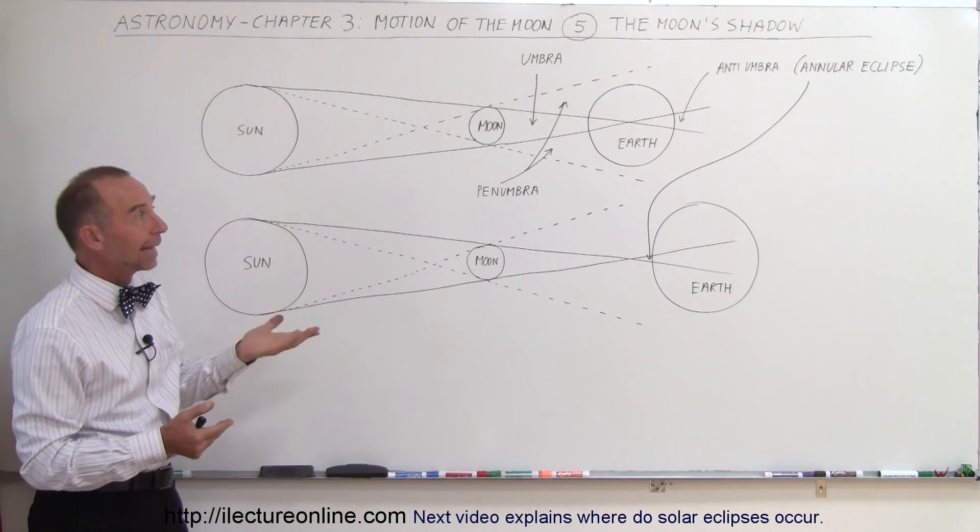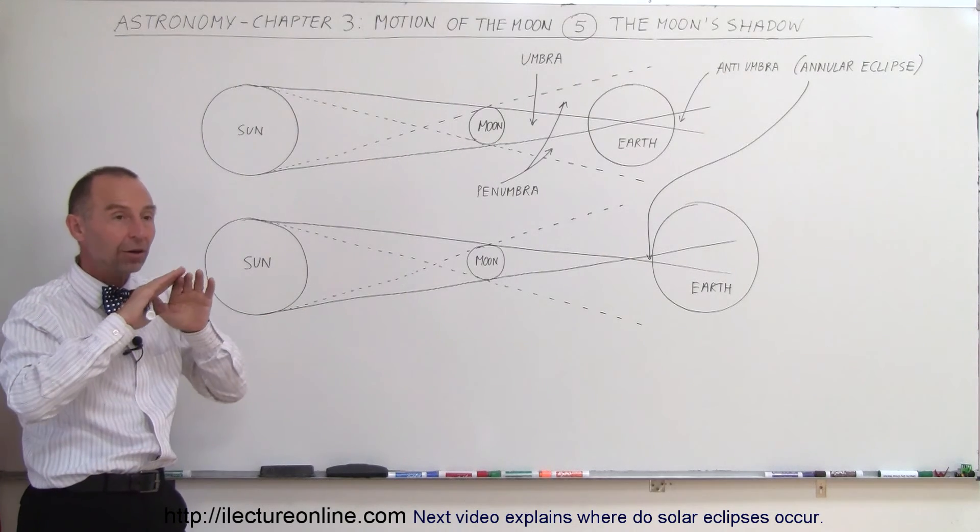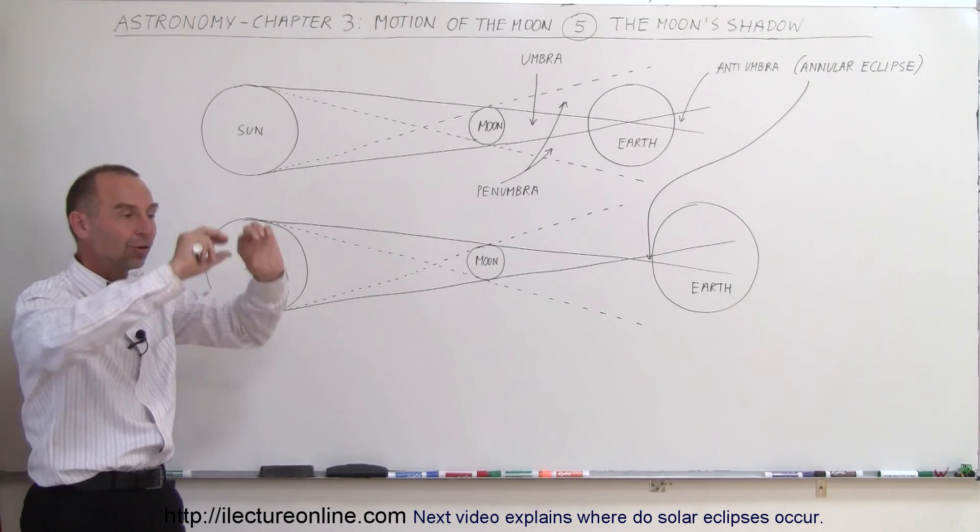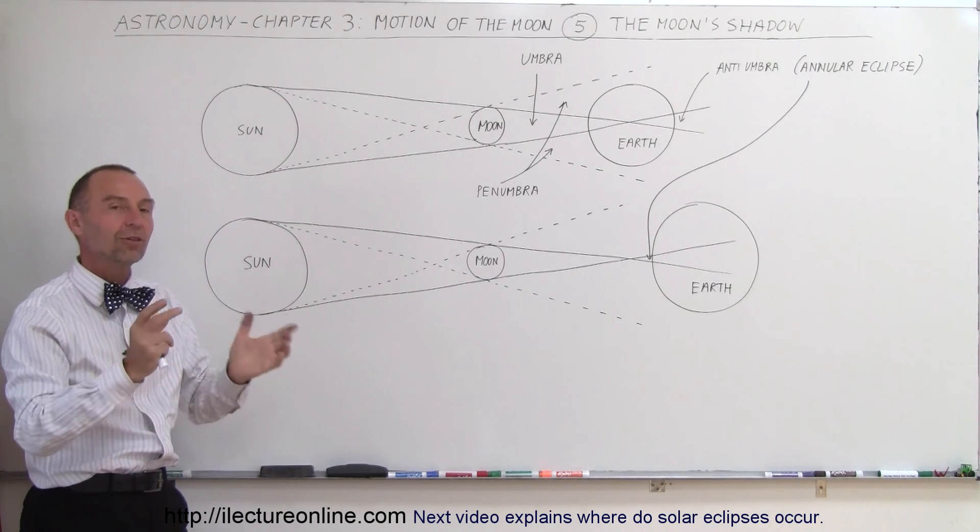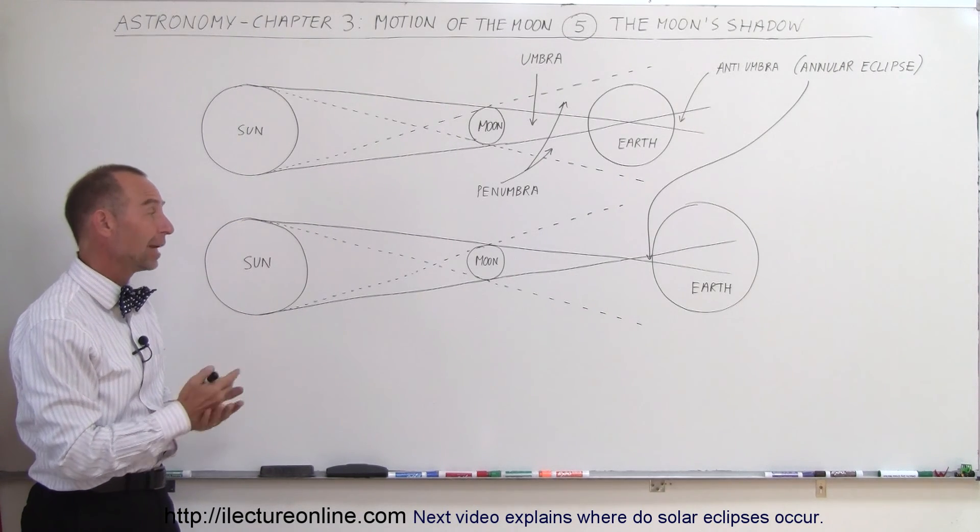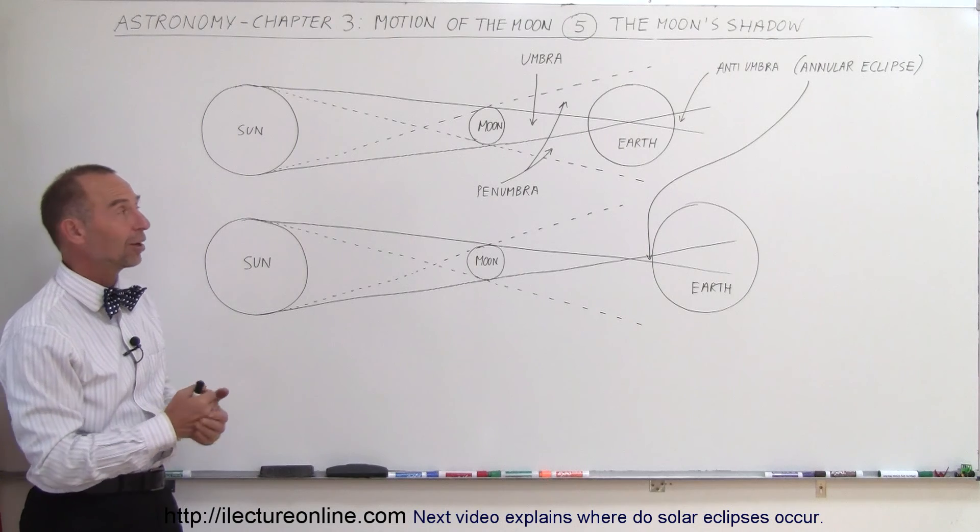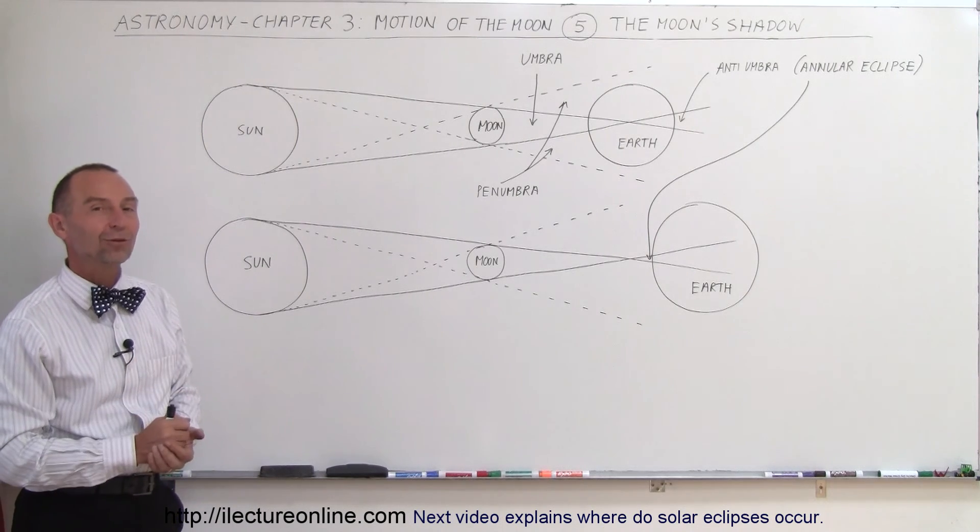And that's really what that means. The anti-umbra is simply where part of the disk is covered, the inside portion, but the outside portion is still visible, and it's called an annular eclipse at that point. And so now you know a little bit more about the shadow and why you have the different kinds of solar eclipses.